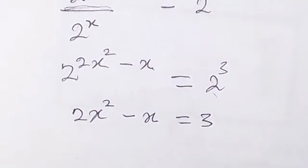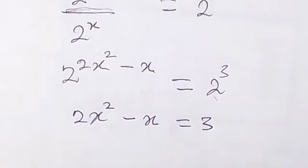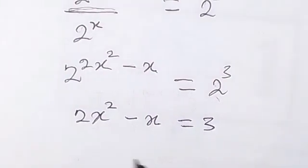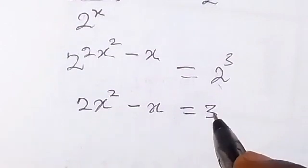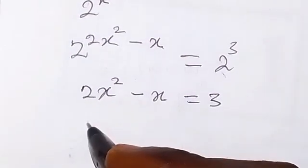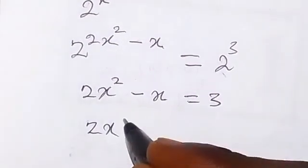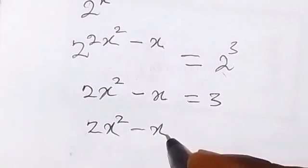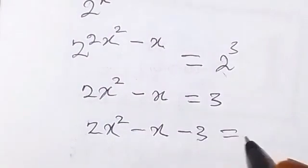Here now we can use this to form a quadratic equation by bringing this 3 to this side. Plus 3 here becomes minus 3. Now that's 2x² minus x minus 3 then equals to 0.